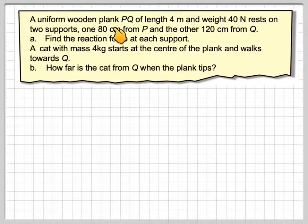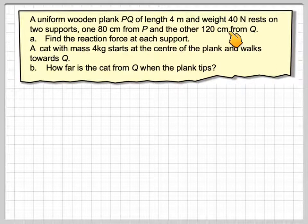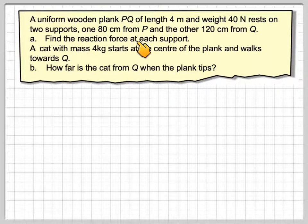A uniform wooden plank PQ of length 4m and weight 40N rests on two supports, one 80cm from P and the other 120cm from Q. Part A: Find the reaction force at each support. A cat with mass 4kg starts at the centre of the plank and walks towards Q. Part B: How far is the cat from Q when the plank tips?